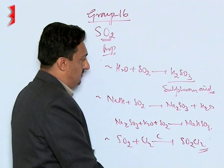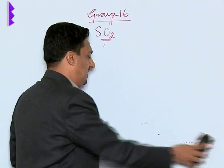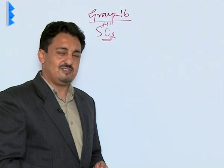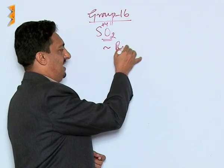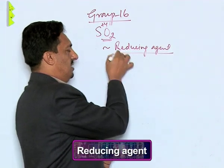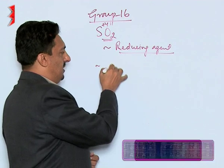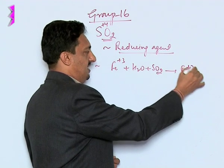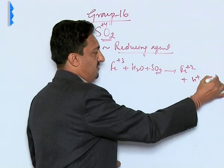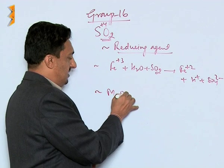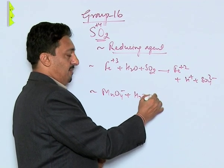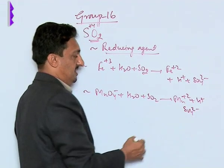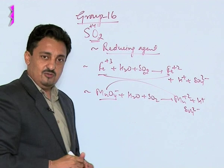An important property of SO2 is that sulphur in SO2 is in the +4 oxidation state, so it can be oxidized to the +6 state as sulphate ion, making SO2 a good reducing agent. For example, SO2 reduces ferric ions (Fe3+) to ferrous ions (Fe2+), and itself gets oxidized to sulphate. Similarly, SO2 reduces KMnO4 (permanganate ion) to Mn2+ and is itself oxidized to sulphate ion.